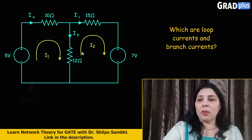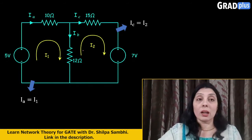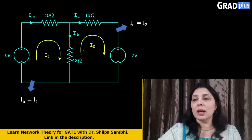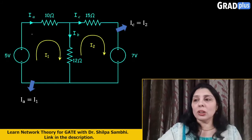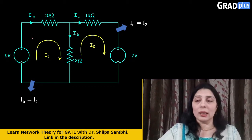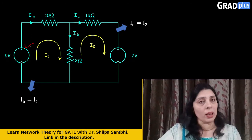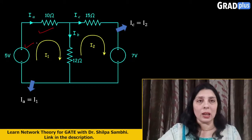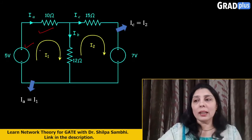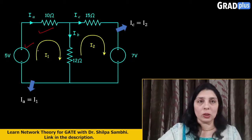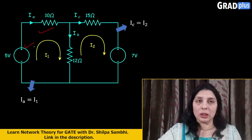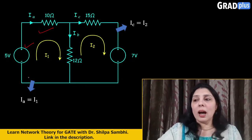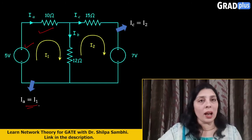So if we just try to make a relation between these loop currents and the branch currents, you may find that Ia is the branch current which is flowing through the circuit element, this 5 volt voltage source and this 10 ohm resistor. And there is a loop current I1 which is flowing through it. So if you just closely observe this particular loop here, Ia will be equal to I1.